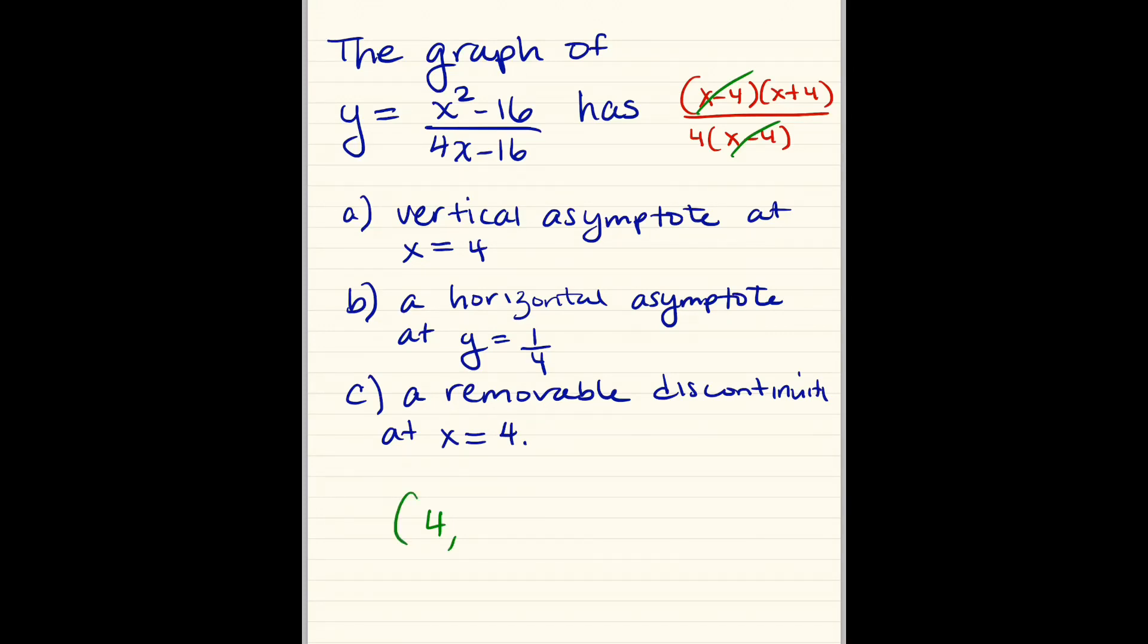We have an issue at 4 comma something. So the way to find that something is to put the 4 back into the remainder, and in the remainder of the function, in the numerator, we have 8 when we do 4 plus 4, and the denominator, we have 4, so 8 over 4, or 2.